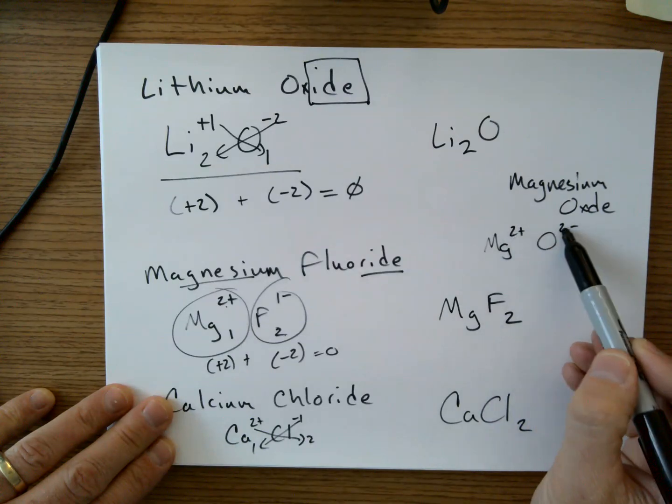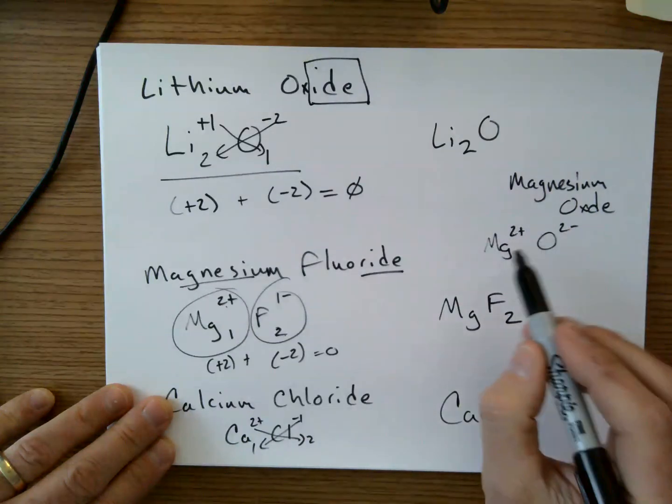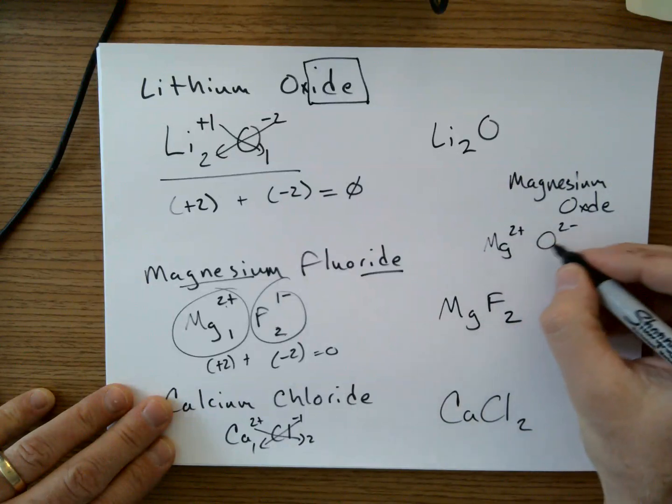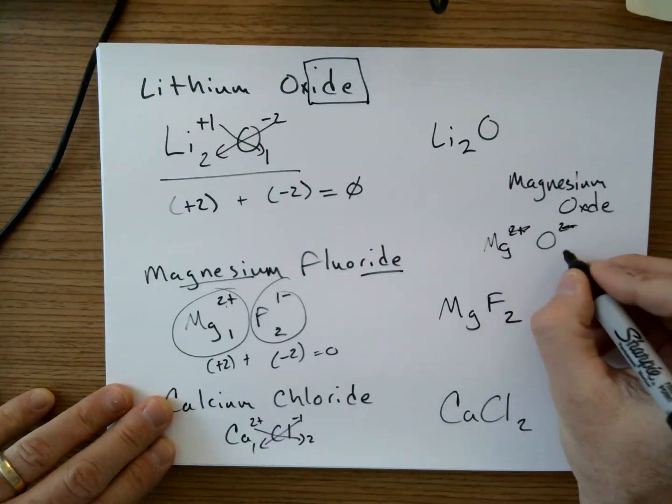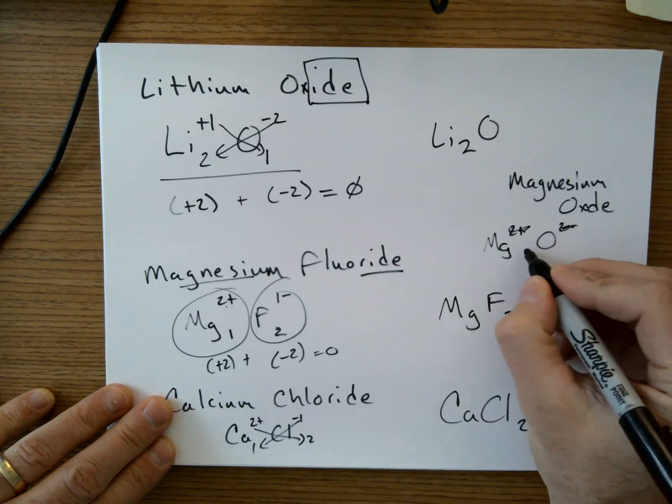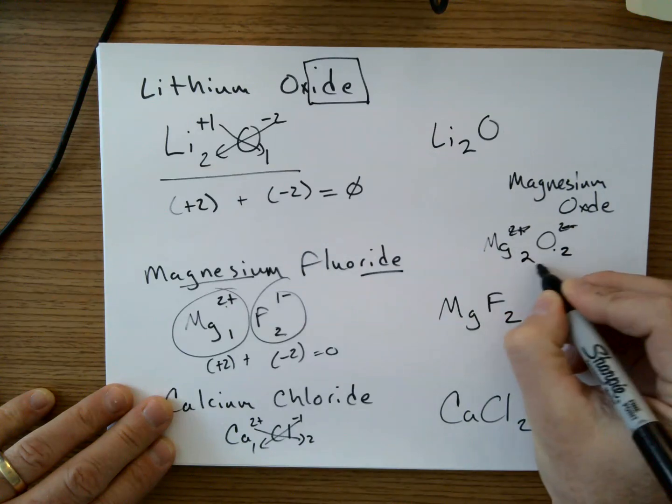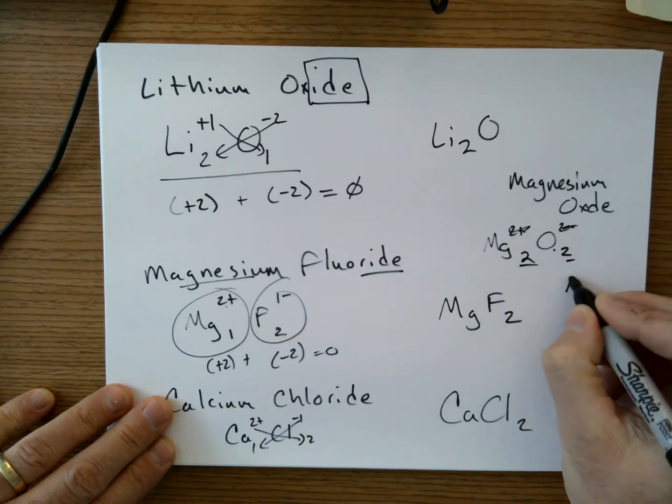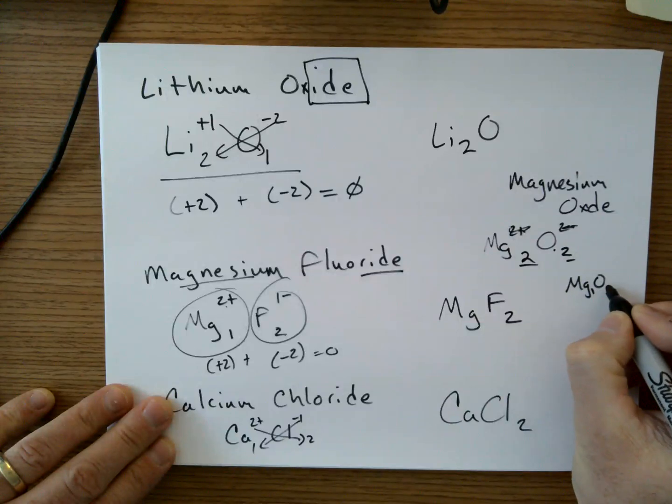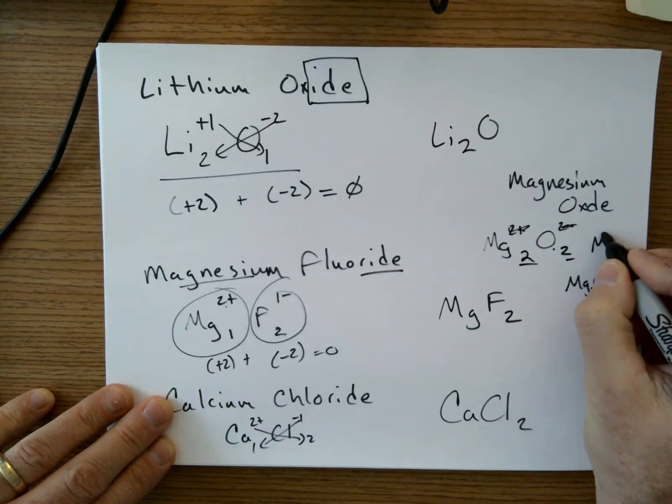You can just cross them out and it's a one to one ratio. You can crisscross, but then you can reduce that to a one to one ratio. So it would be one to one and we don't write the one. It would just be MgO.